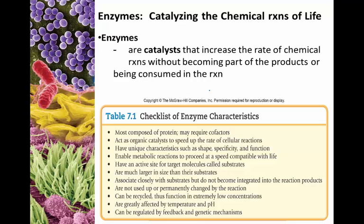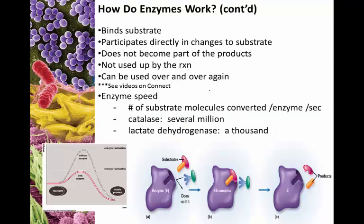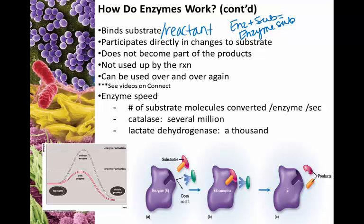Enzymes bind a substrate — the substrate is what the enzyme works on, also called the reactant. Enzymes and their substrates must bond together to form what's called the enzyme-substrate complex. The enzyme directly helps change the substrate, either by adding to it, breaking it apart, or possibly changing its shape. At the end of the change, the enzyme releases the substrate and is free to grab onto a new substrate and start the reaction over and over again.